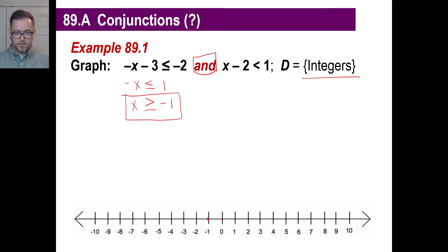So it can be this value, and this one, all the way across the entire number line like this. We'll use a different color for the second inequality.